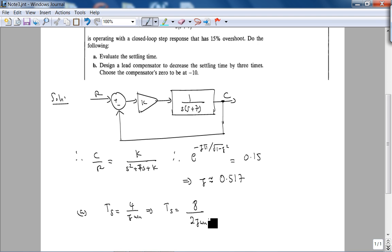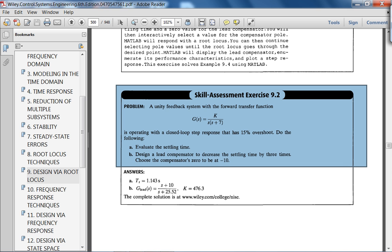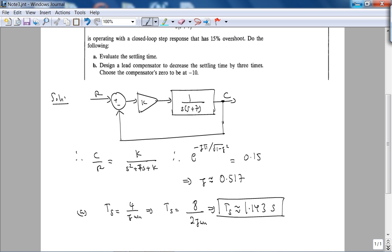So this is 2 zeta omega n, and you know that 2 zeta omega n is 7, which implies settling time is approximately 8 over 7, which is 1.143 seconds. Let's see what they have in the book. Yeah, 1.143 seconds.